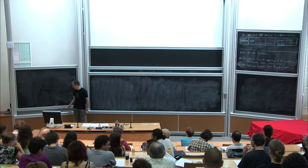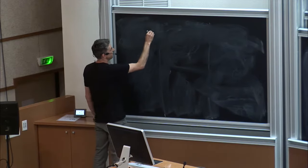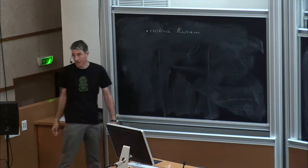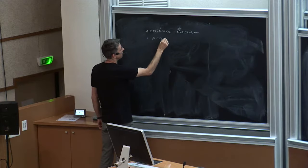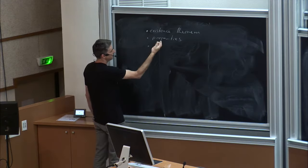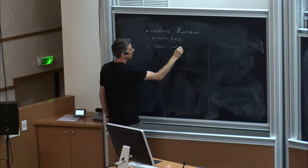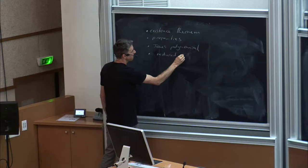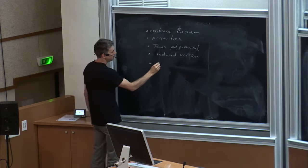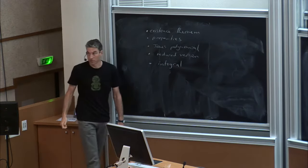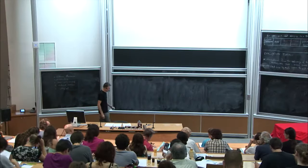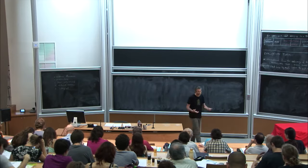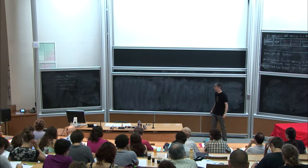Let me begin by reminding you what we did yesterday. We saw an existence theorem for Khovanov homology. Then using the theorem, we deduced some properties. We made a connection with the Jones polynomial. We saw that there was a reduced version. And I was in the middle of telling you that there was also an integral version, which had both a reduced and an unreduced variant. But the relationship between the two was somewhat more complicated — namely, there was a long exact sequence relating the two.